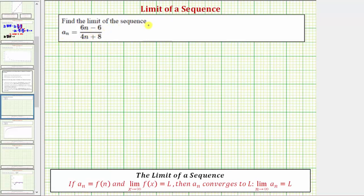We're asked to find the limit of the sequence given by a sub n. Looking at the theorem below: if a sub n equals the function f of n, and the limit as x approaches infinity of f of x equals L, then a sub n converges to L, and the limit as n approaches infinity of a sub n equals L.